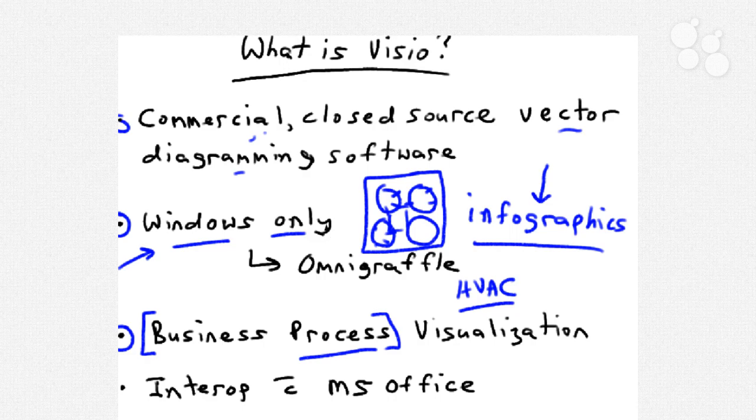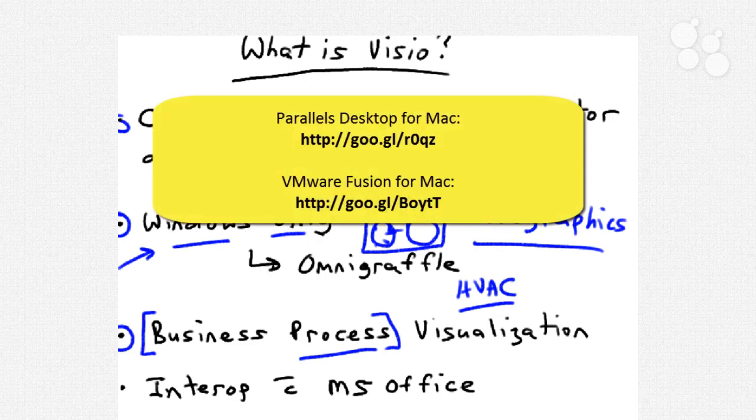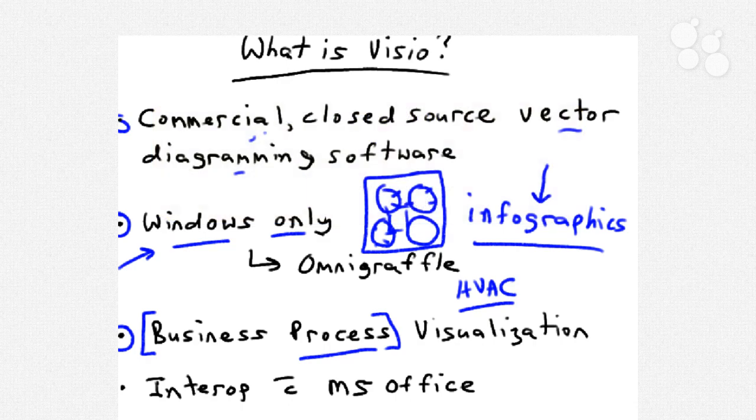So of course, there's the question, well, I use Mac, what can I do? Well, depending upon how much of a geek you are as far as cross-platform stuff, you could install software like Parallels Desktop or VMware Fusion on your Mac, and then install Visio 2010 on your Mac and have it run natively that way. That's one way to go.